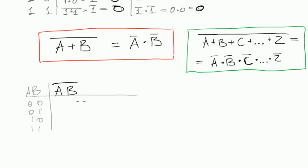So it would be 0 multiplied by 0, which is 0, and negated is 1.